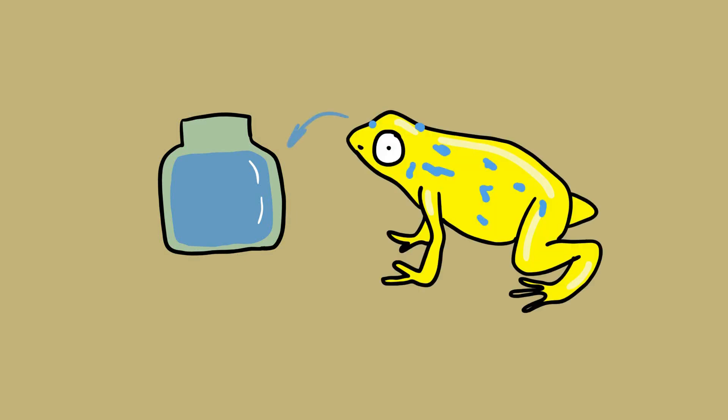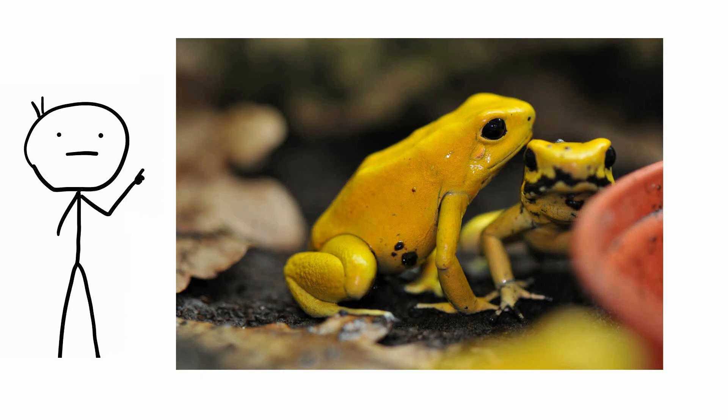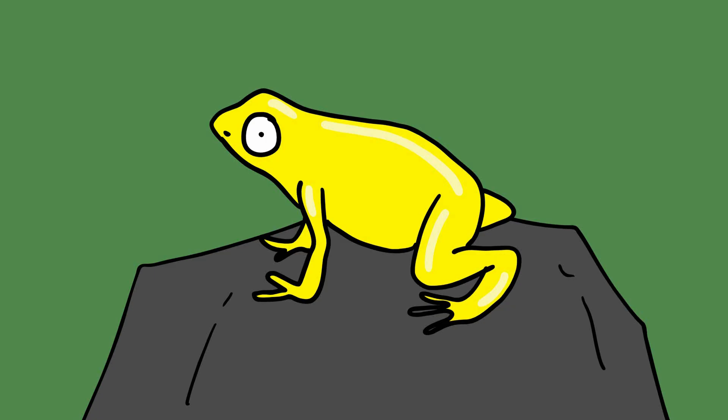Batrachotoxin is collected from the toxic secretions of frogs from the Dendrobatidae family, although it can also be found in some beetles and birds. The golden poison dart frog is around the size of the end of your thumb, yet contains enough venom to kill 10 men. For this reason, poison dart frogs can afford to be outrageously brightly colored.